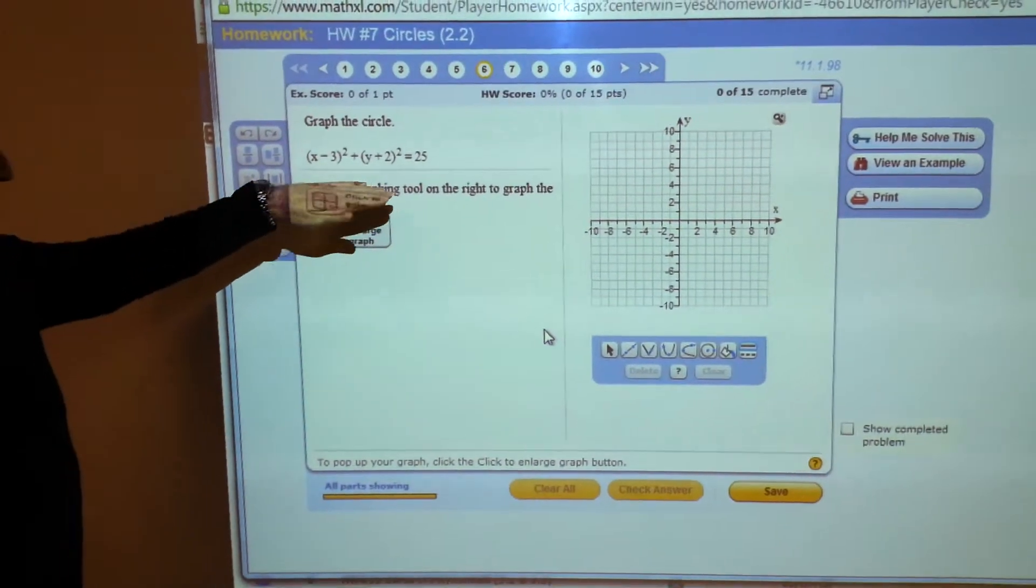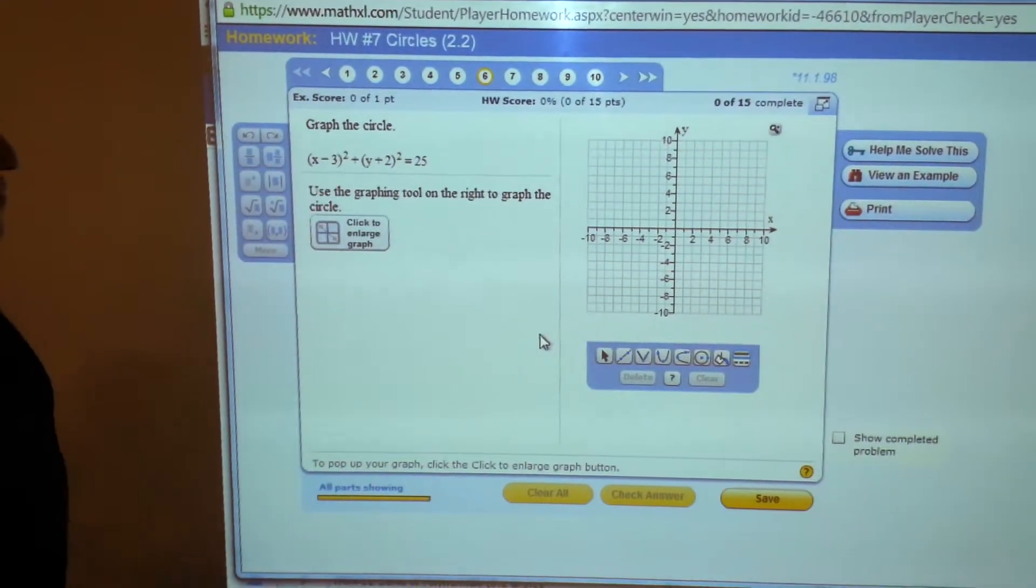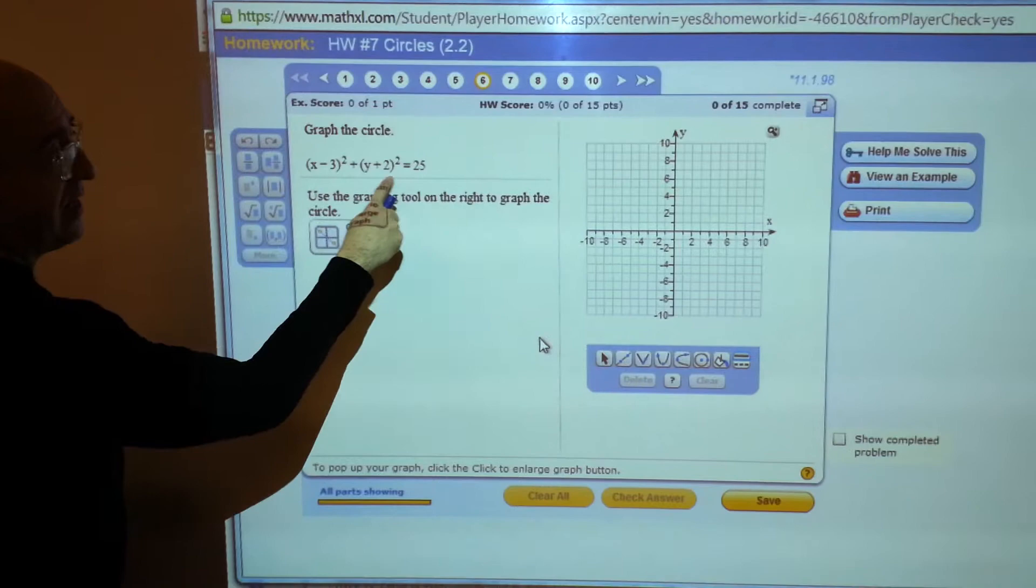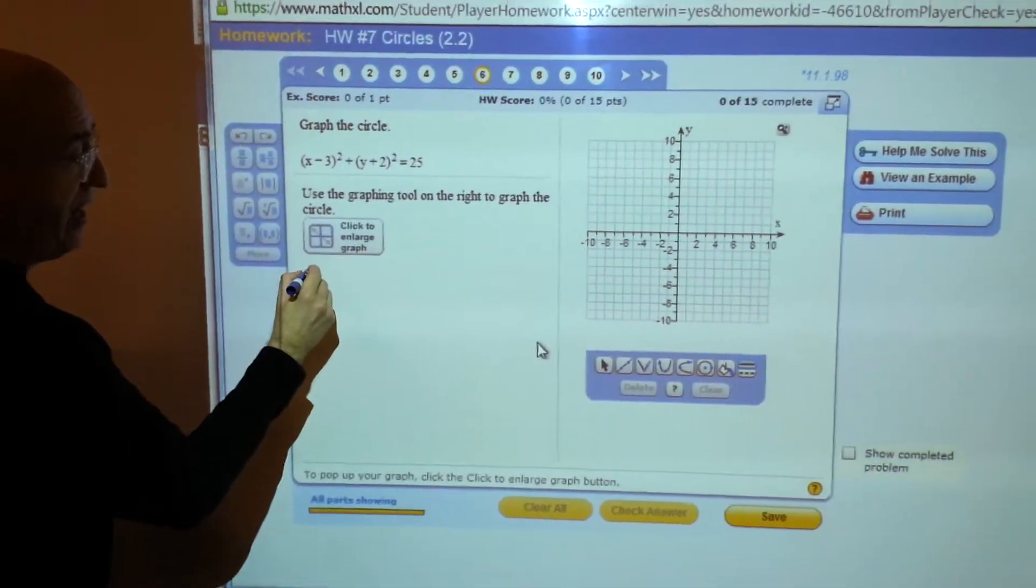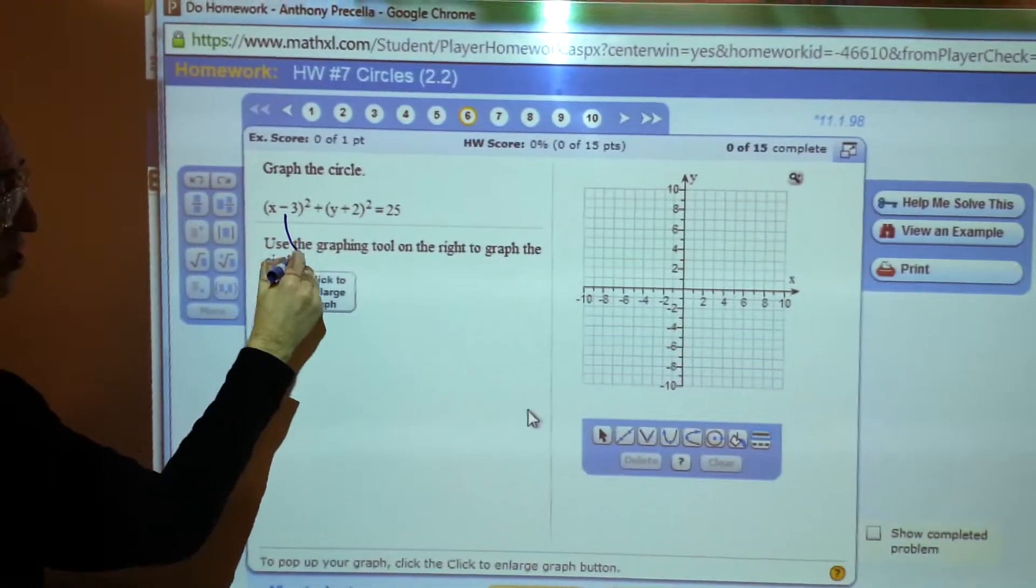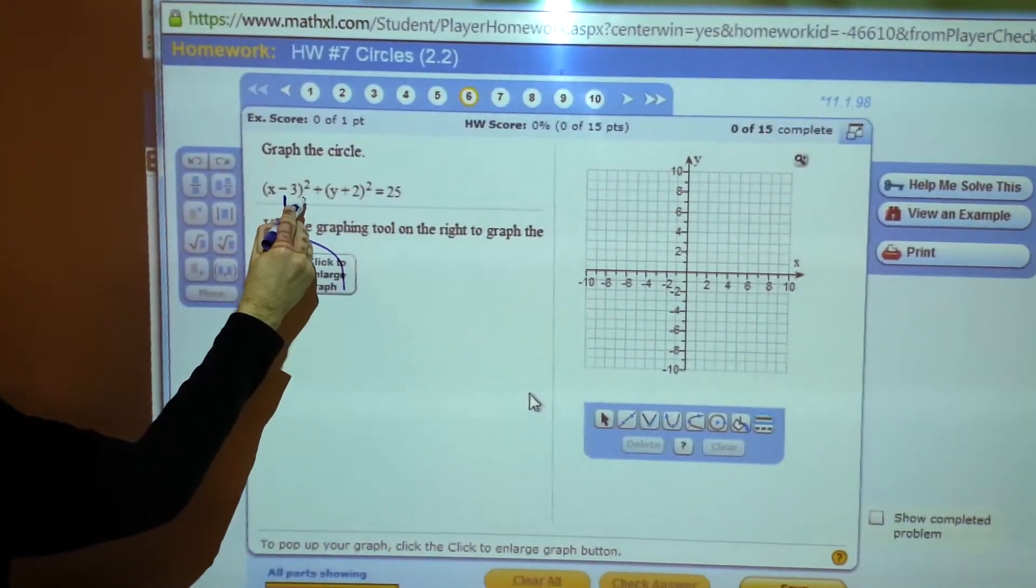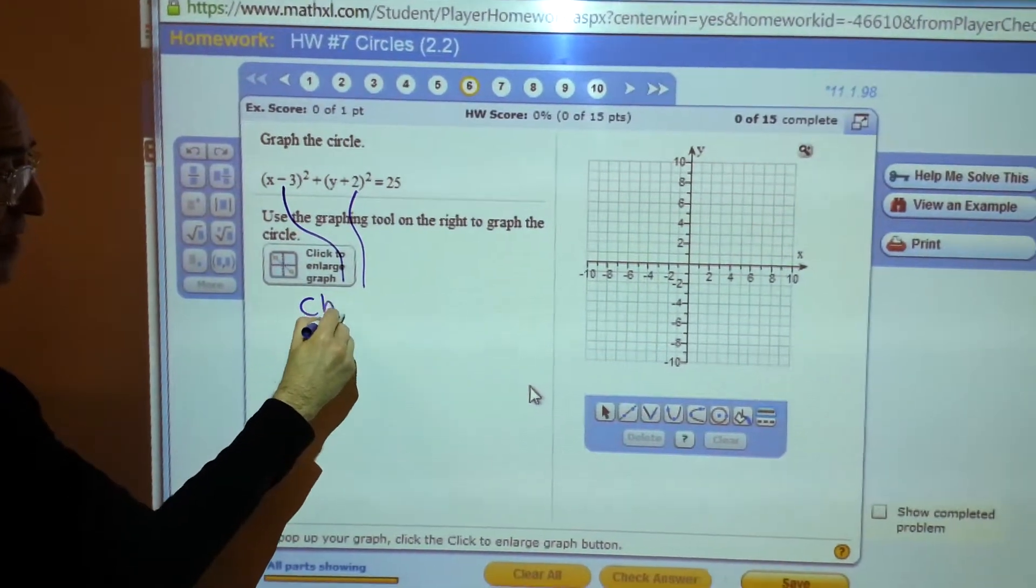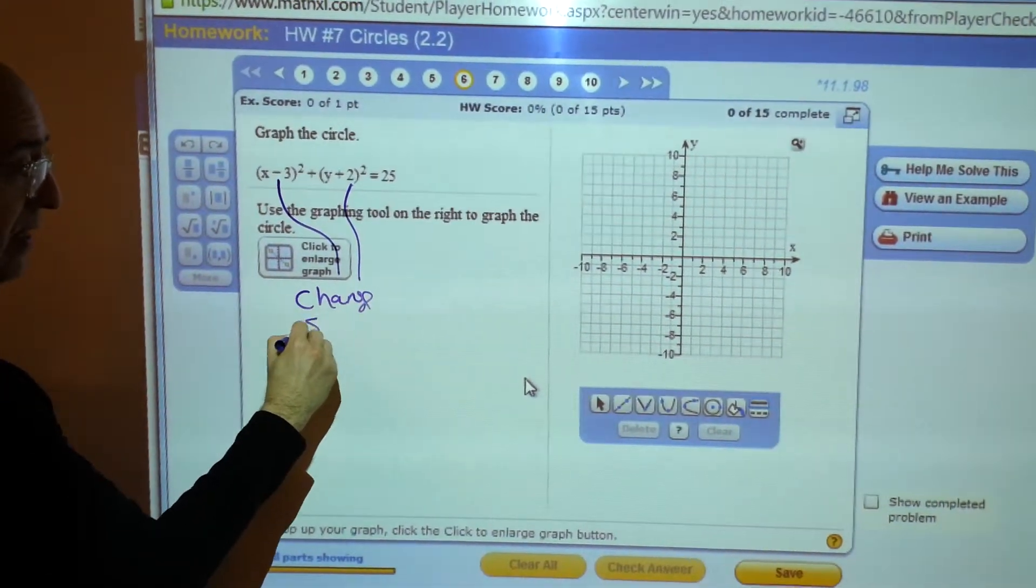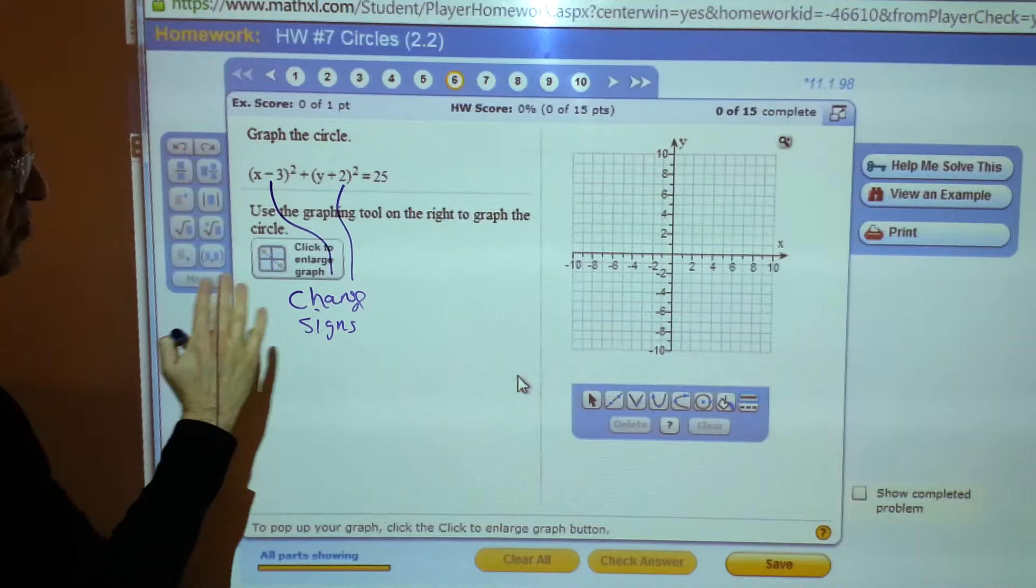And we've already said that if you have an equation for a circle written in center radius form, in order to find the center and the radius, you change the sign of the number in the parenthesis with the x, change the sign of the number in the parenthesis with the y, that gets you the center.